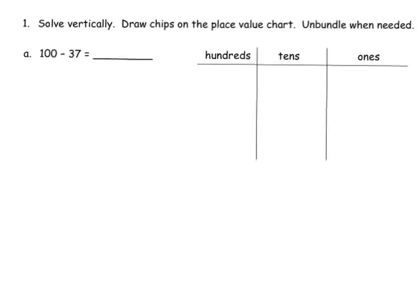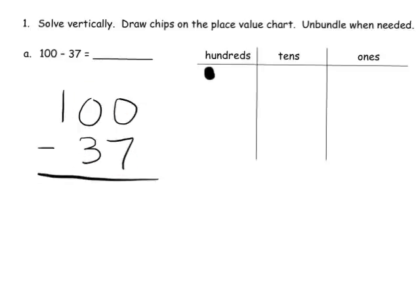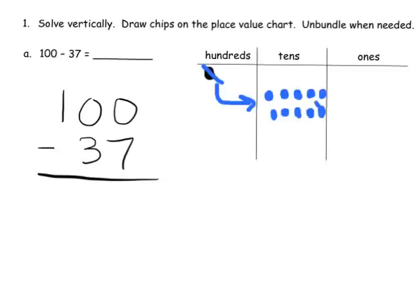We're going to do this on the number disks first on the place value chart. We're going to model a hundred — there's a hundred. And now we need to subtract 37, so I'll write it down vertically: a hundred minus 37. Remember to help students line up the ones and tens columns. We need values in the ones column to take away seven, so we're going to unbundle twice. We unbundle and get ten tens, then unbundle again and get ten ones.